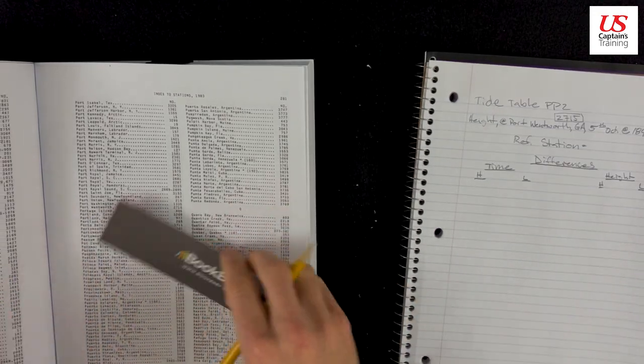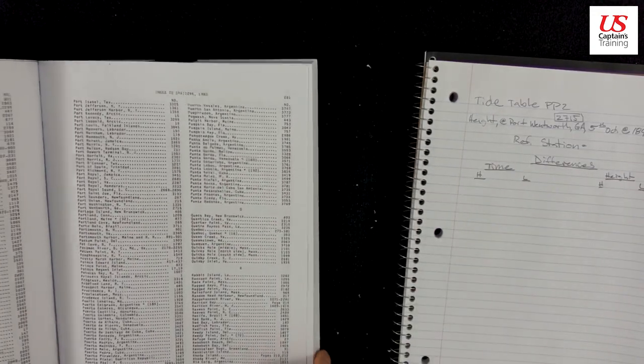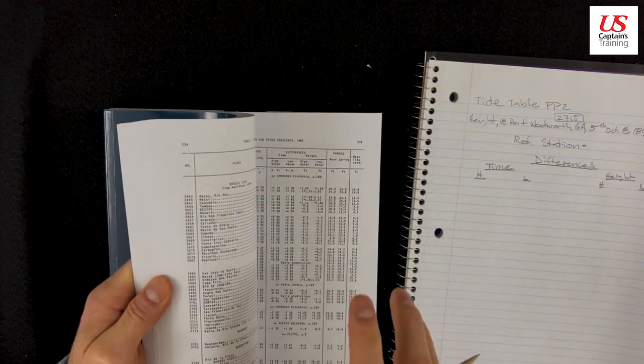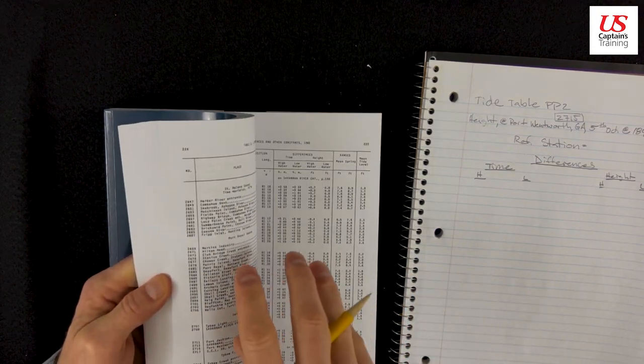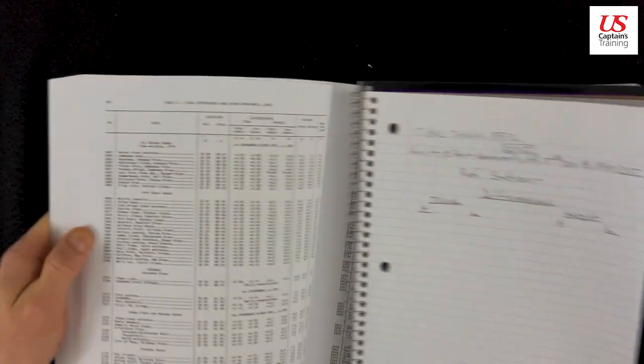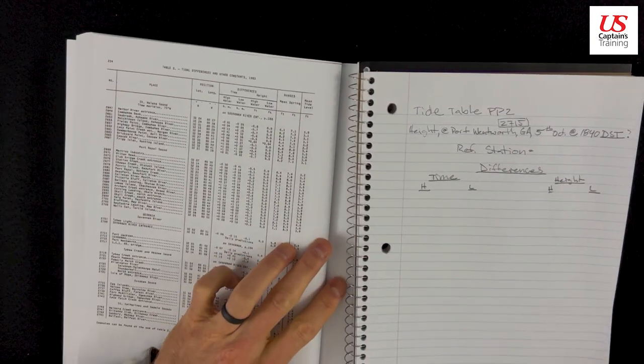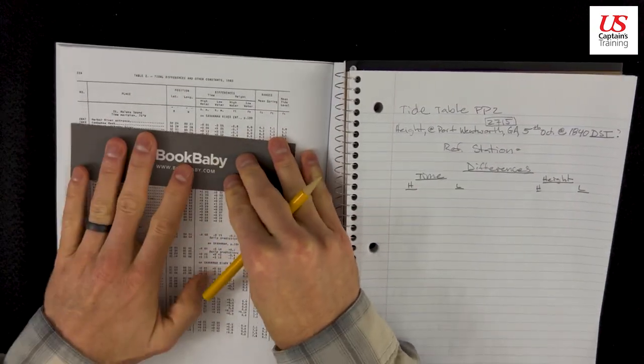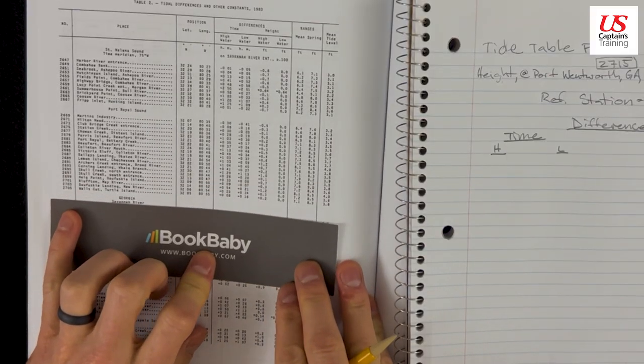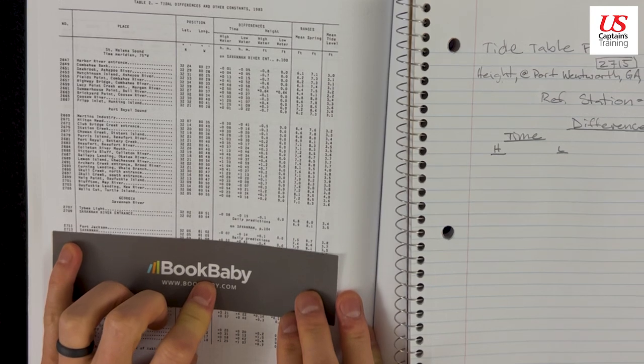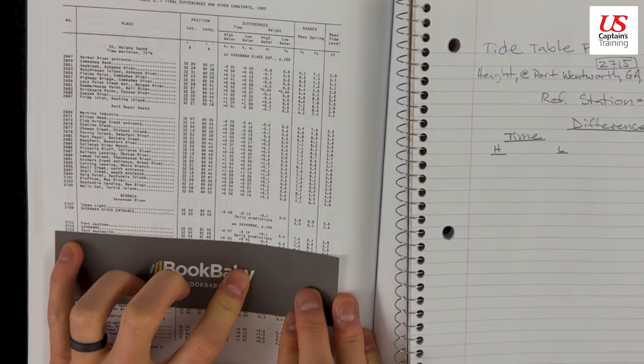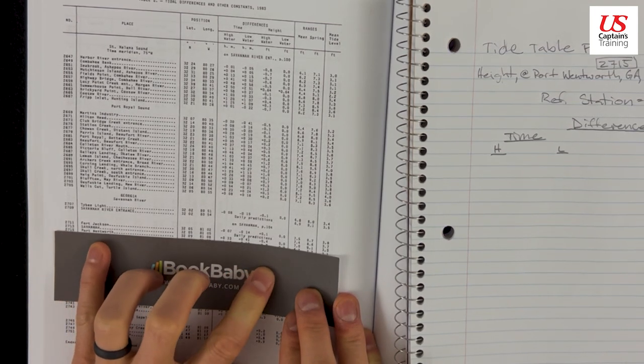And now we jump into table twos and we find 2715. We're on the right page. 2715. Here we are. 2715, Port Wentworth.